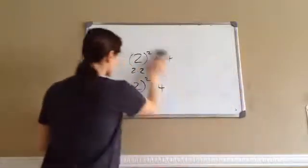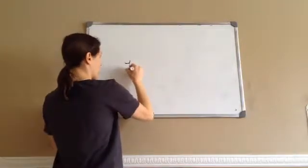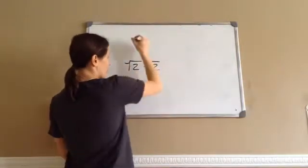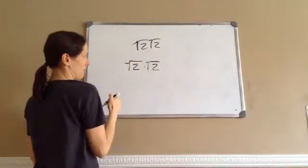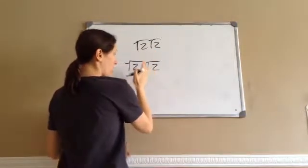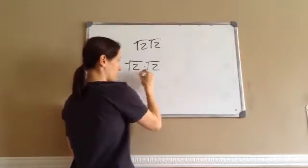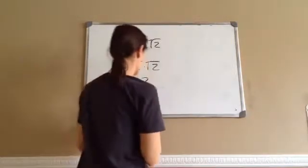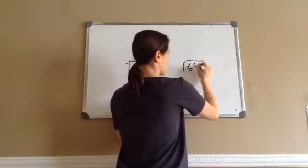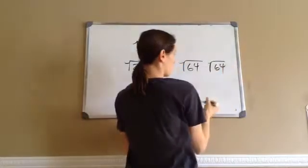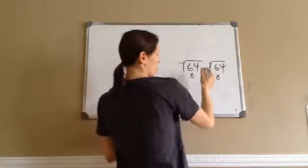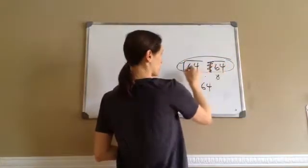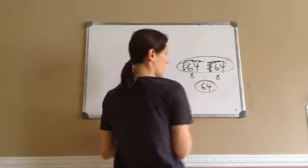Next thing I want to show you — which you've done in the past as well — is square root of 2 times the square root of 2. The book will just write them next to each other, meaning multiply. Square root of 2 times square root of 2 just erases the radicals and gives you 2. For example, square root of 64 times square root of 64: we know square root of 64 is 8, and 8 times 8 is 64. So when you have two of them, they cancel out and give you the number.